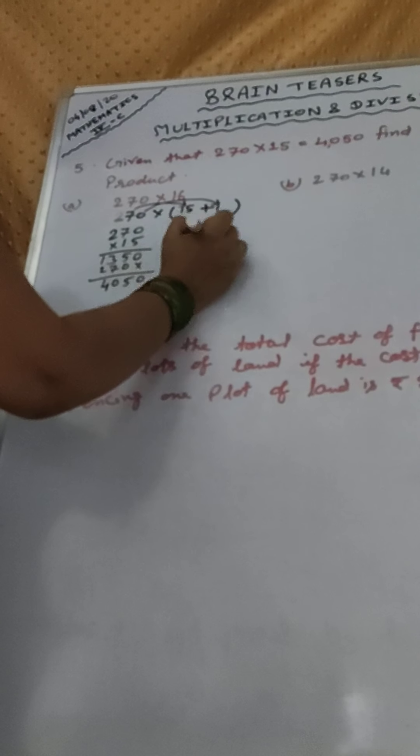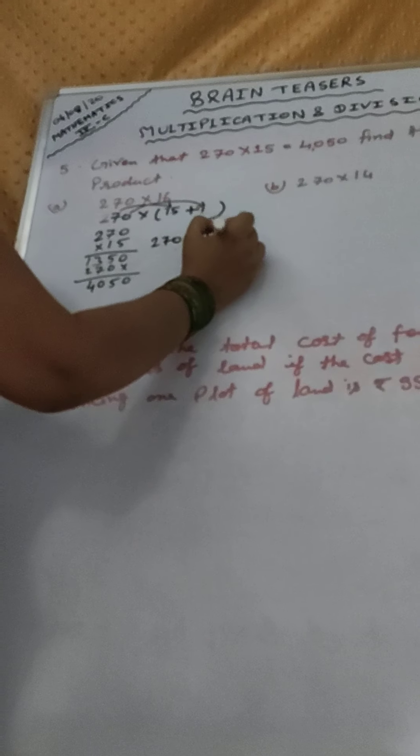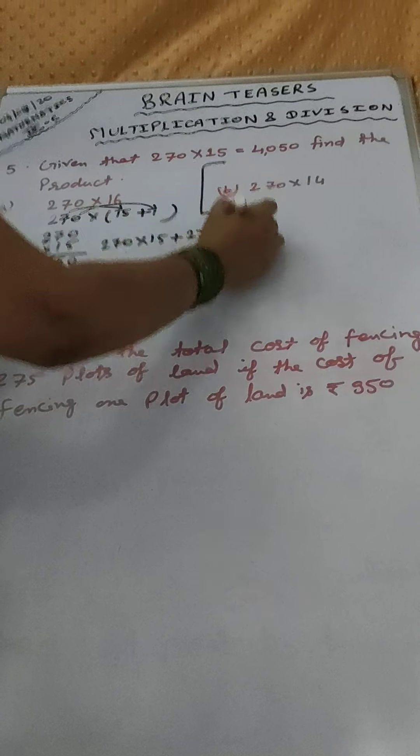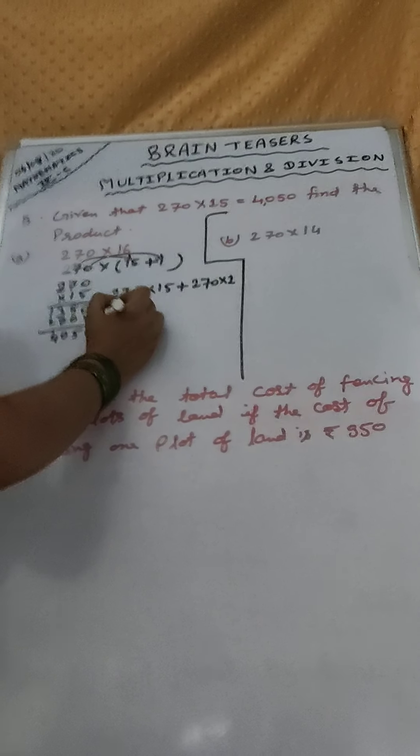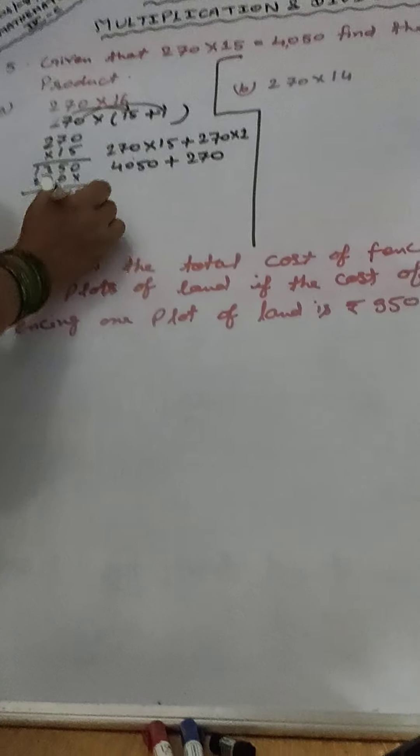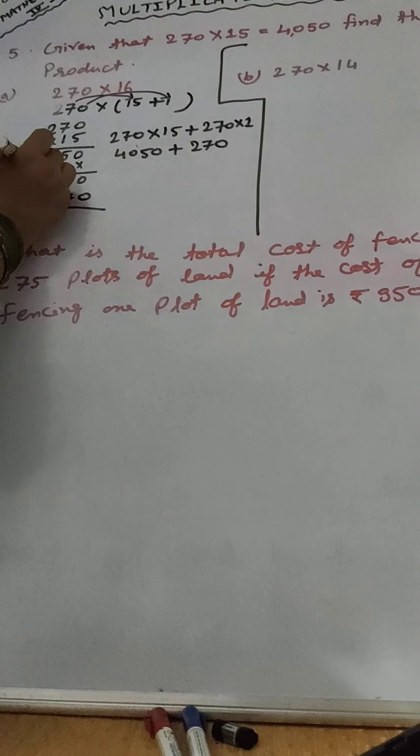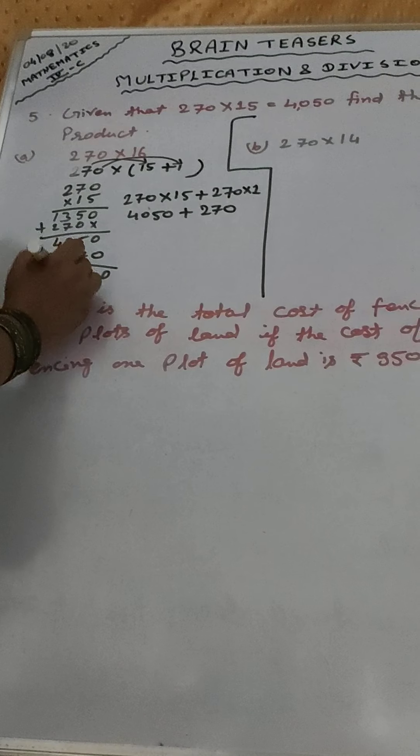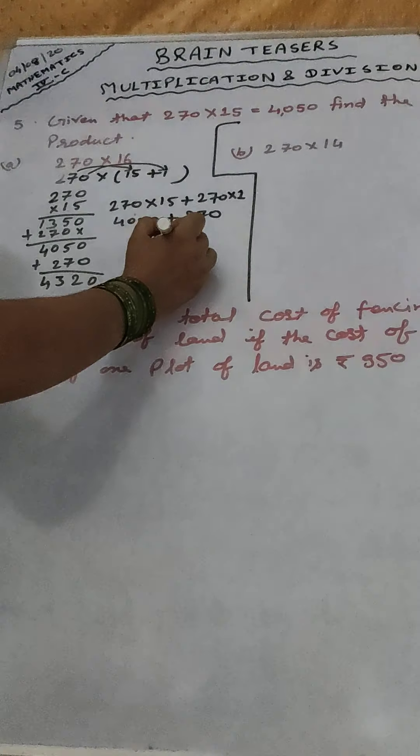270 into 15 plus 270 into 1. That is 4050 plus 270. We can add here. 0, 7 plus 5, 12, carry 1. 2 plus 1, 3. And here 4. It means 4320.